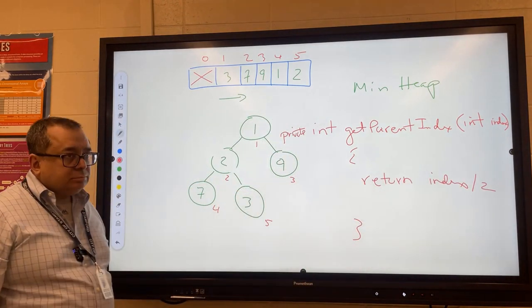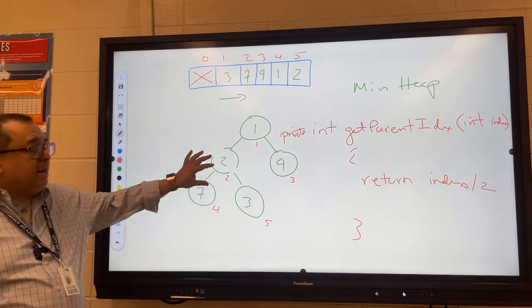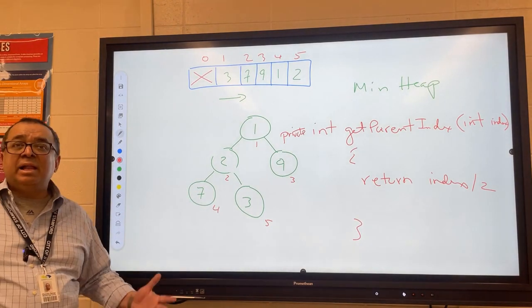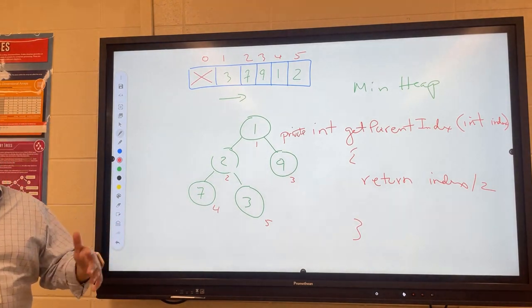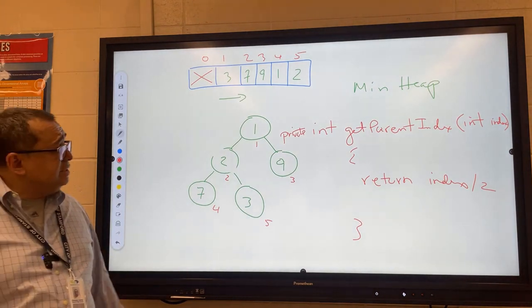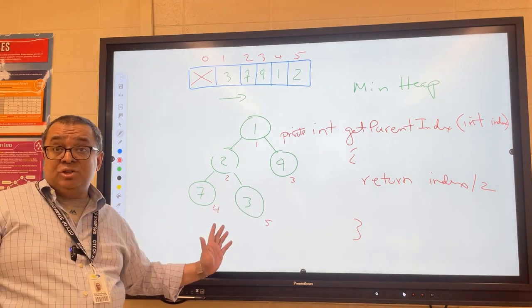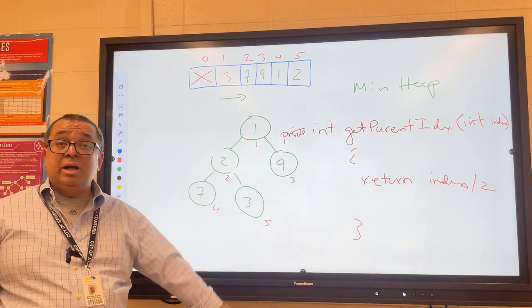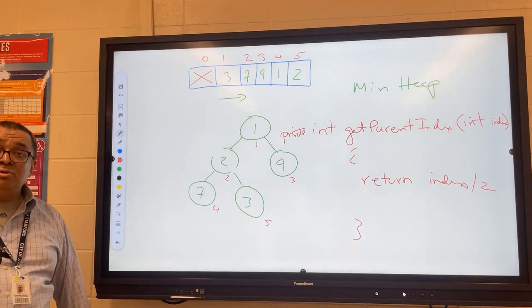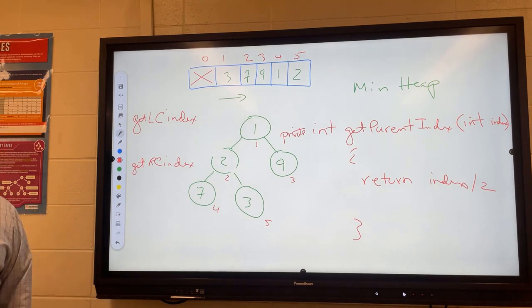If I ever needed to know the relationship between the parent and its two children, for example, if I needed to calculate the index of the left child of a particular index, let's say I give you the index 3 and I want to know what is going to be the index of its left child and what's going to be the index of its right child. What are the formulas that we're going to use to do that? Please discuss with your partner.